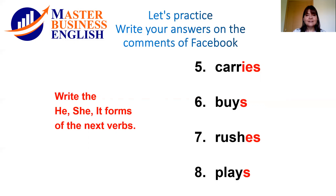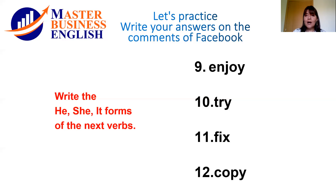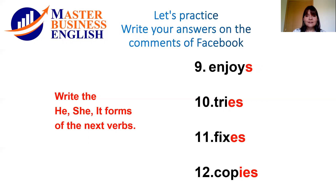More practice — carry, buy, rush, play. The answers are: carries, buys, rushes, plays. 'Carry' ends in consonant plus Y — drop Y and add IES. 'Buy' — be careful! It ends in vowel plus Y, so we apply the general rule and just add S. 'Rush' ends in SH so we add ES. 'Play' ends in vowel plus Y, so we just add S. Examples: enjoy, try, fix, copy — gives us: enjoys, tries, fixes, copies. 'Enjoy' is vowel plus Y so just add S. 'Try' is consonant plus Y so drop Y and add IES. 'Fix' ends in X so add ES. 'Copy' ends in consonant plus Y so drop Y and add IES.